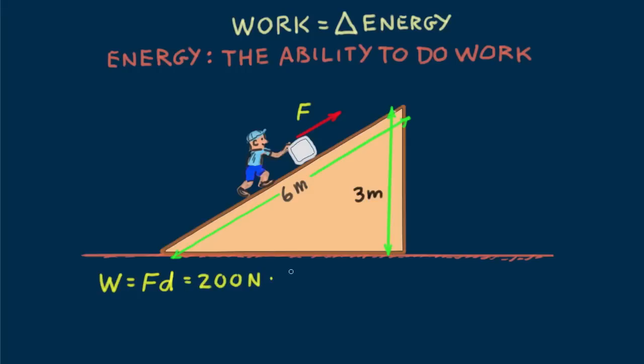Then the work he does on the block is 200 Newtons times 6 meters equals 1200 Joules. The unit of energy is the joule, where one joule is the work done by one Newton over a distance of one meter. So at the top of the three meter high ramp, the block of ice has acquired 1200 joules of energy that it didn't have at the bottom of the ramp.